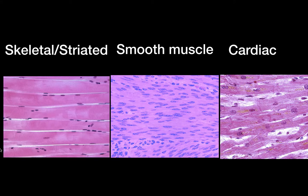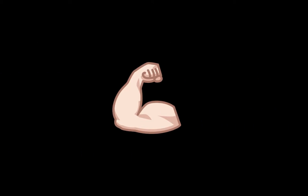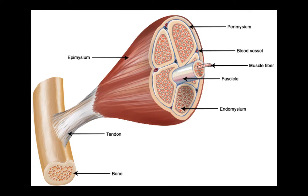I want to talk about how skeletal muscles are organized. If we look at the biceps as an example and cut it right about here, it would look something like this. At a macro level, the muscle connects to bones at either side by tendons. We have the general sense that muscles are connected to bones, and when they contract they move part of our skeletal system.